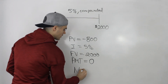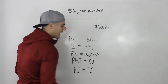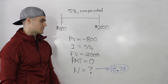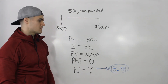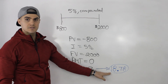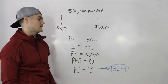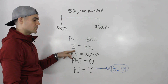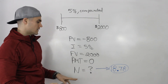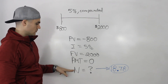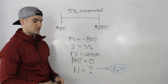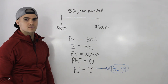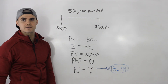We are solving for N. When you compute N in your calculator, you end up getting 18.78 — and that is 18.78 years, because the interest rate we inputted was an annual rate, so the periods are annual as well. It takes 18.78 years for you to buy this stereo.